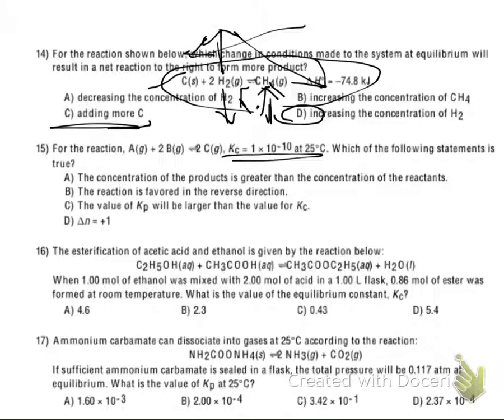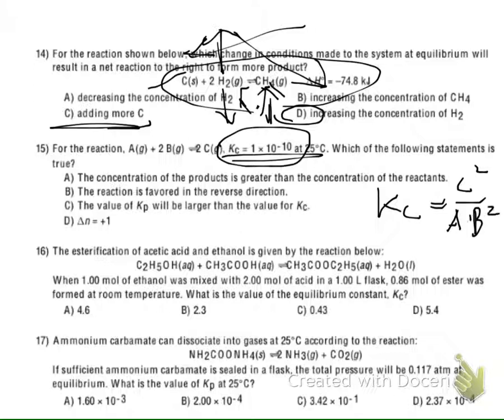We need to check the Kc value. This Kc equals 1 × 10⁻¹⁰ — it is very, very small. If we write Kc as the concentration of C squared divided by the concentration of A times the concentration of B squared, and Kc is very small, that means the denominator — the reactant concentration — is very large.